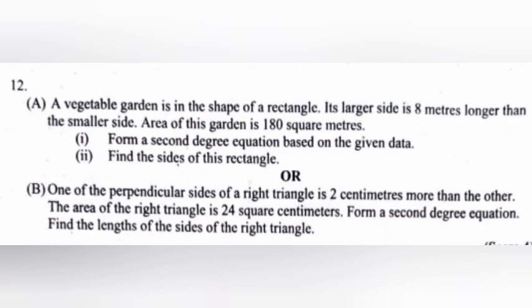12a. A vegetable garden is in the shape of a rectangle. Its larger side is 8 meters longer than the smaller side. Area of this garden is 180 square meters.